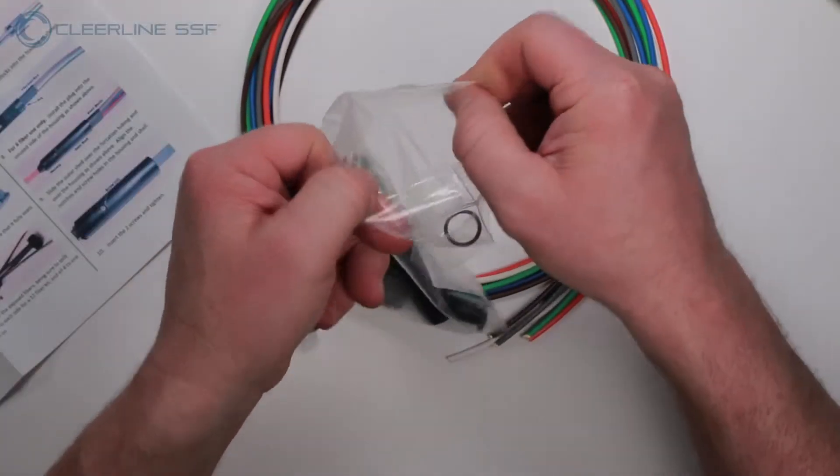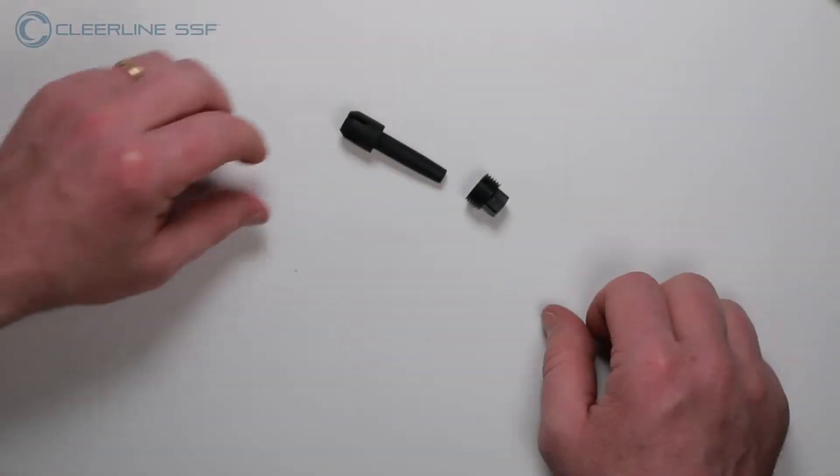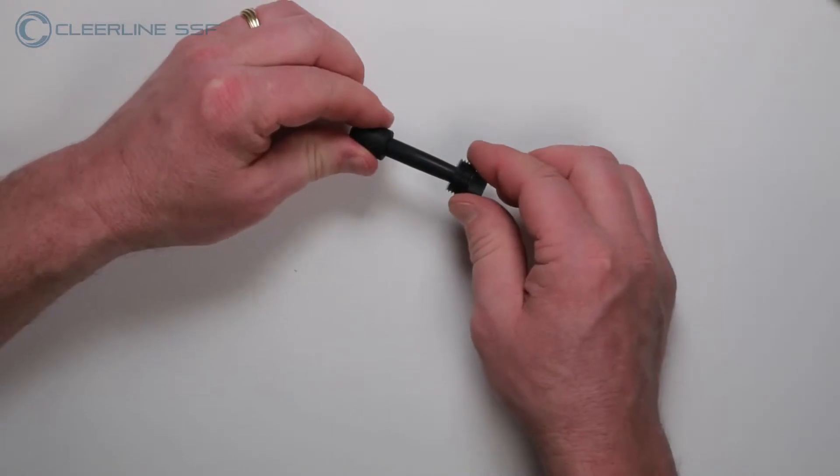Step 1: Using the appropriate kit for your cable strand count, slide the included nut and grommet strain relief boot onto the cable.